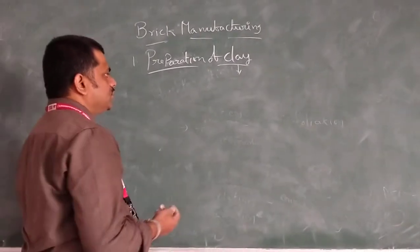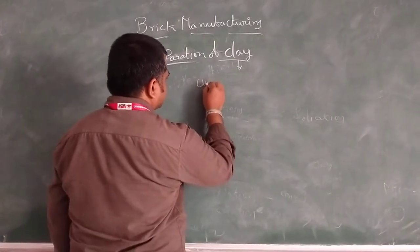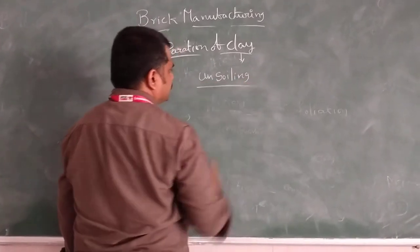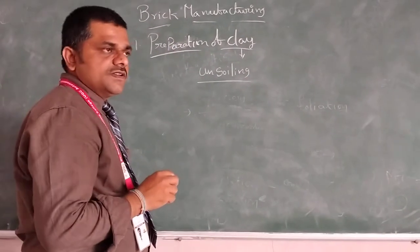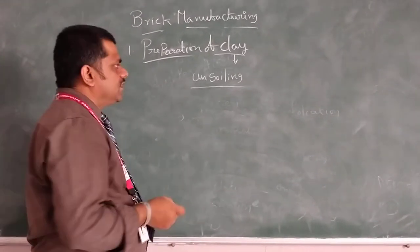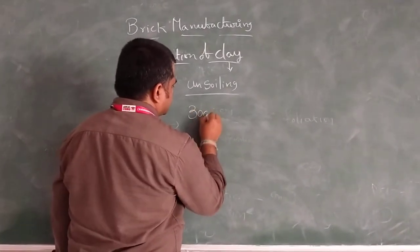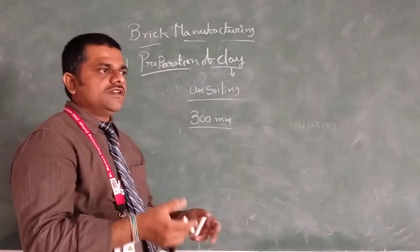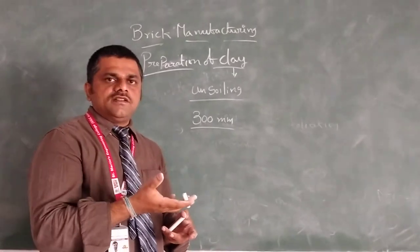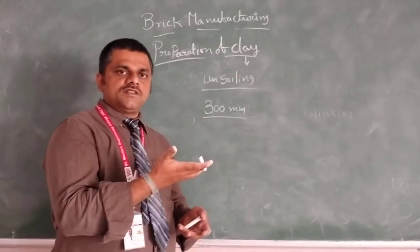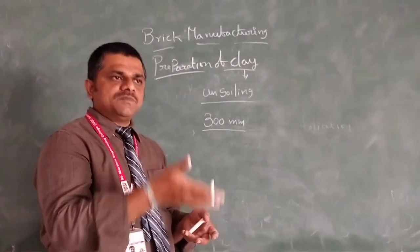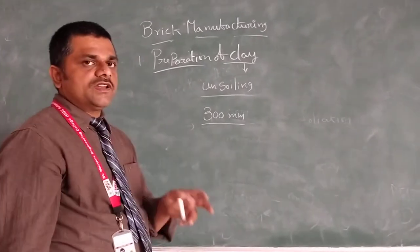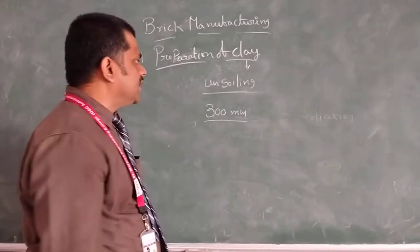After that we have to do the unsoiling. Unsoiling is the first step. How do we do the unsoiling? We have to use sieves of 300 mm size. What materials present on the top of the sieve, that we have to remove. Which material passes through the sieve, that only we have to collect. The top layer we have to remove.